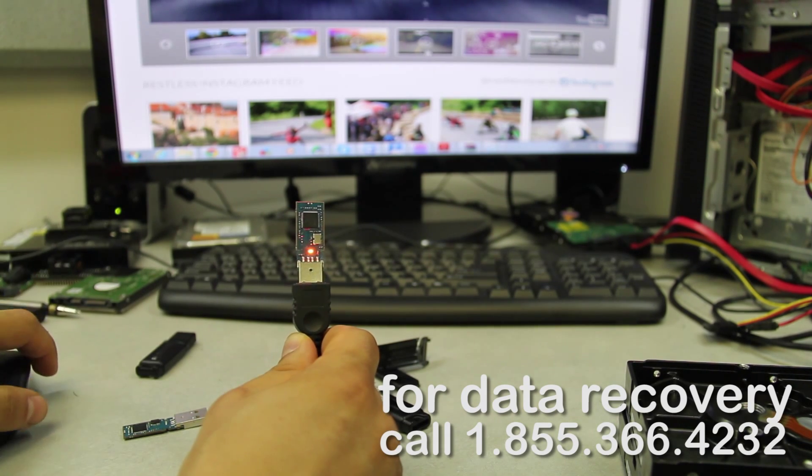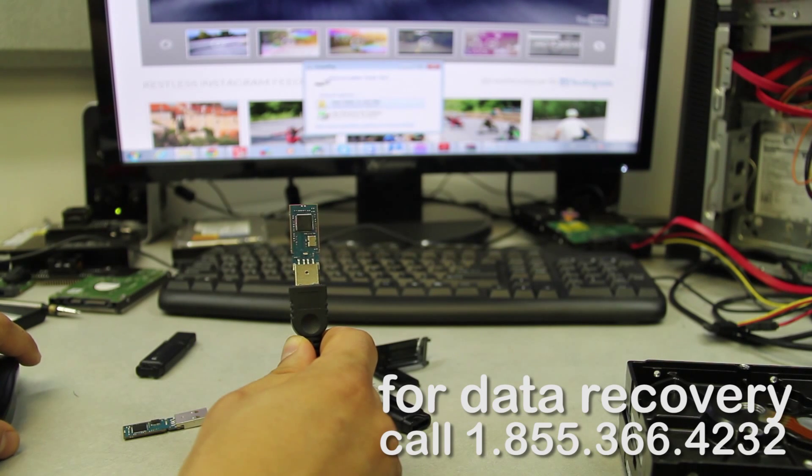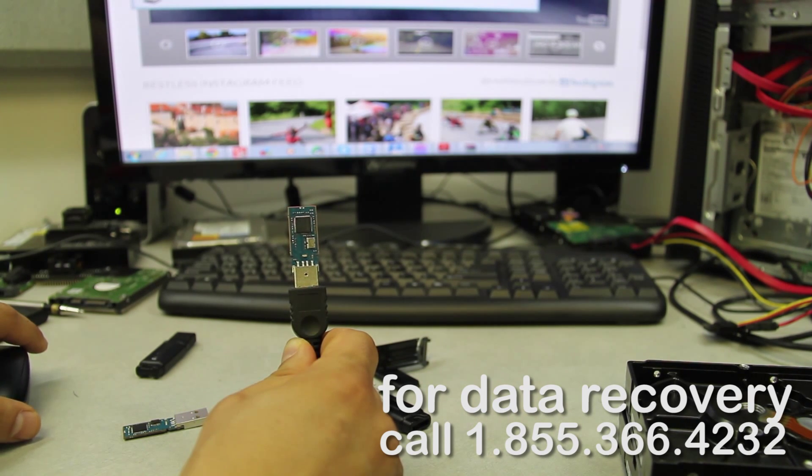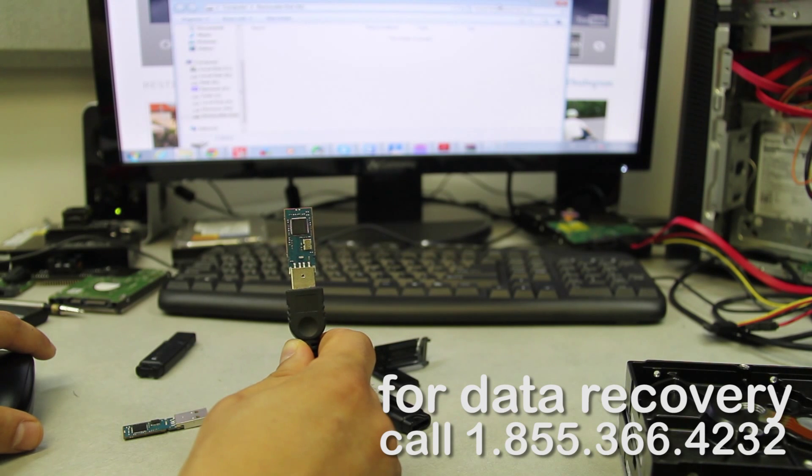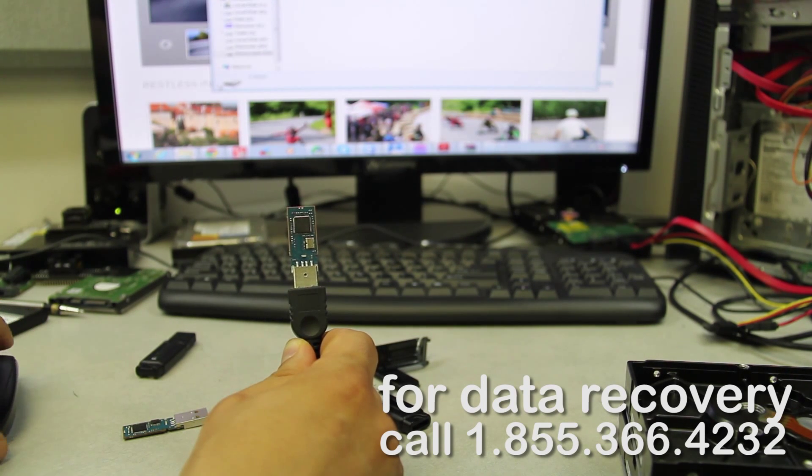So when I plug it in we get the beep and I don't know if you guys can see but there is the window, removable disk. Open file contents and as you can see there it is, it's just empty, there's nothing on there, it's formatted.